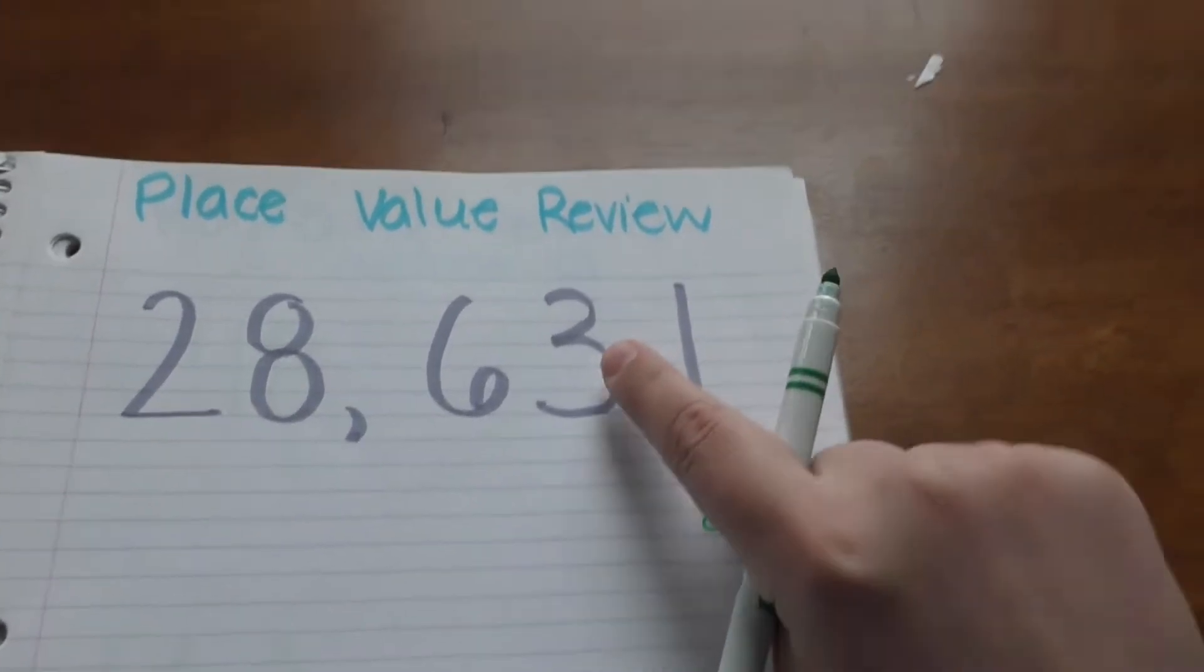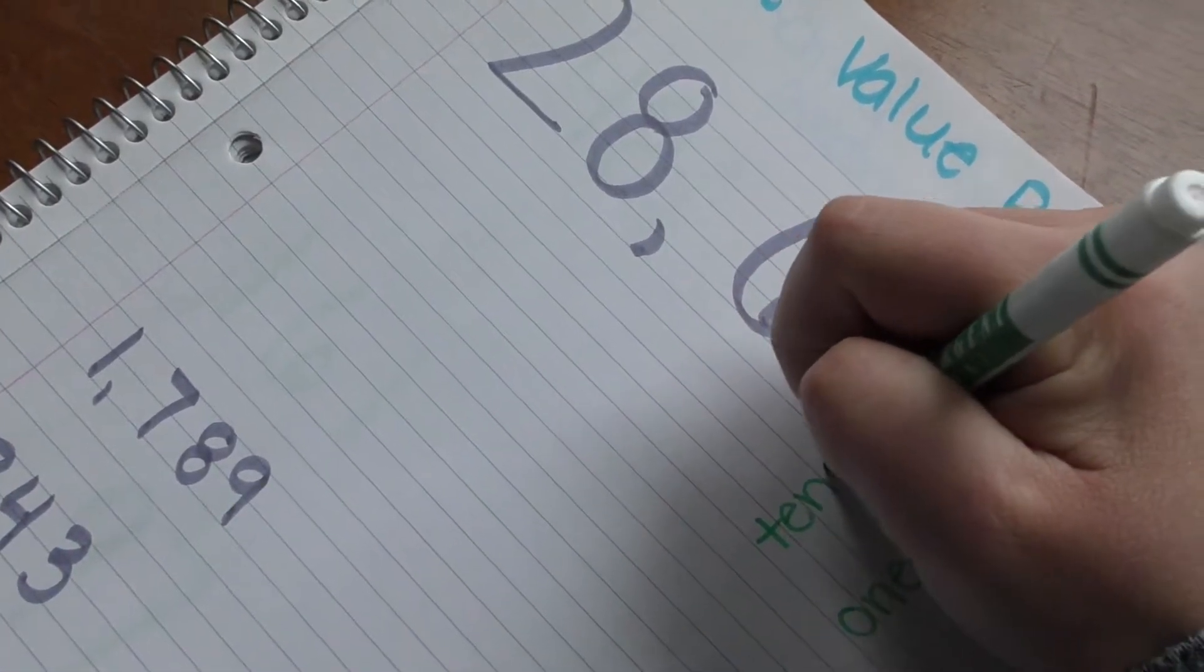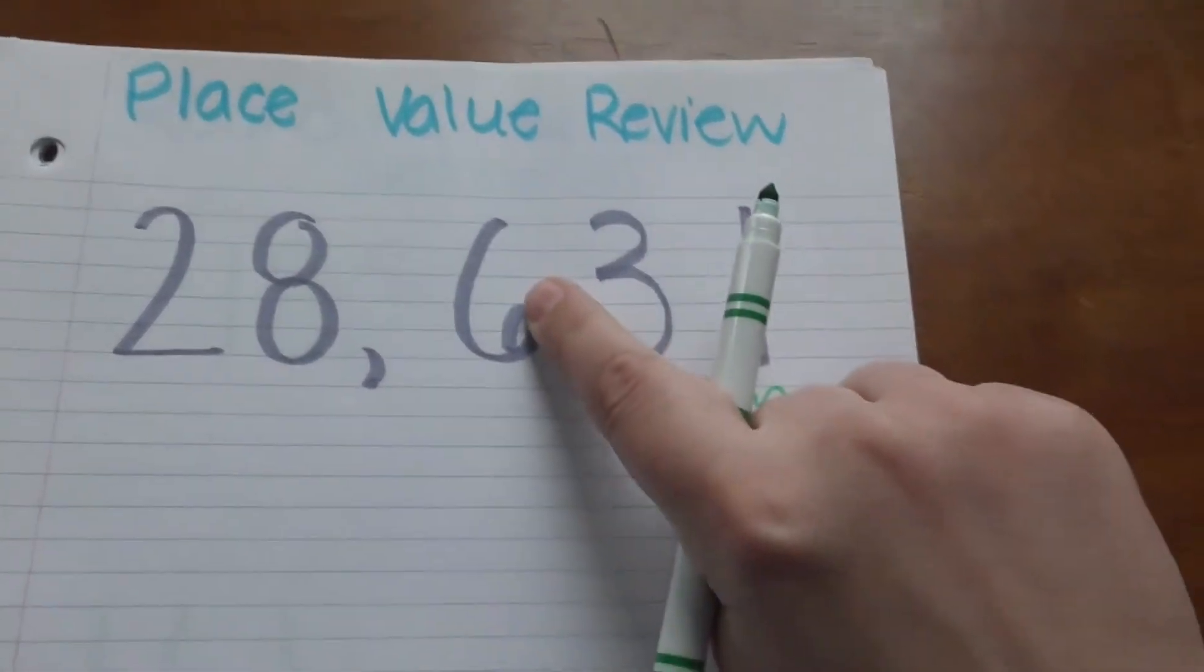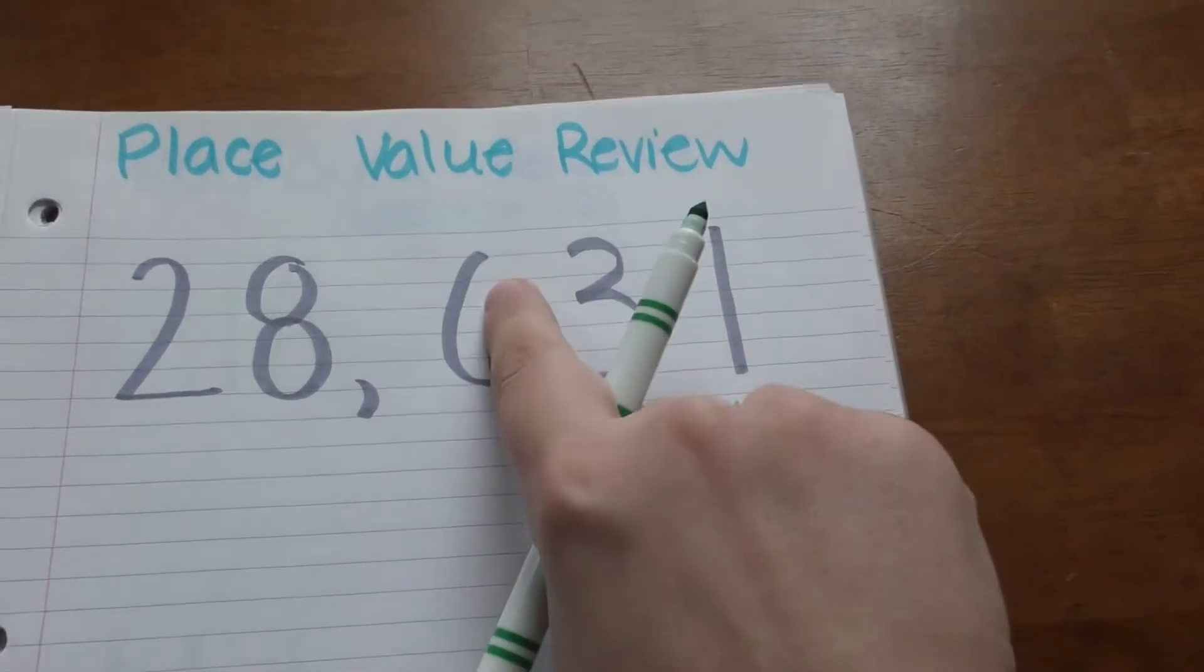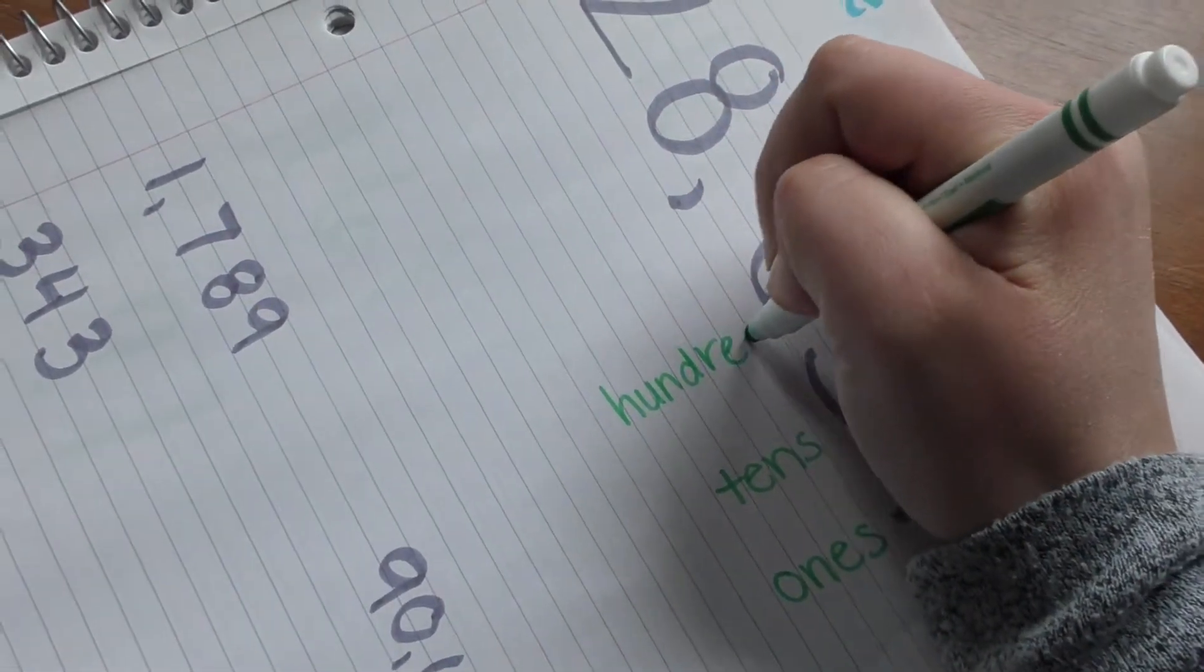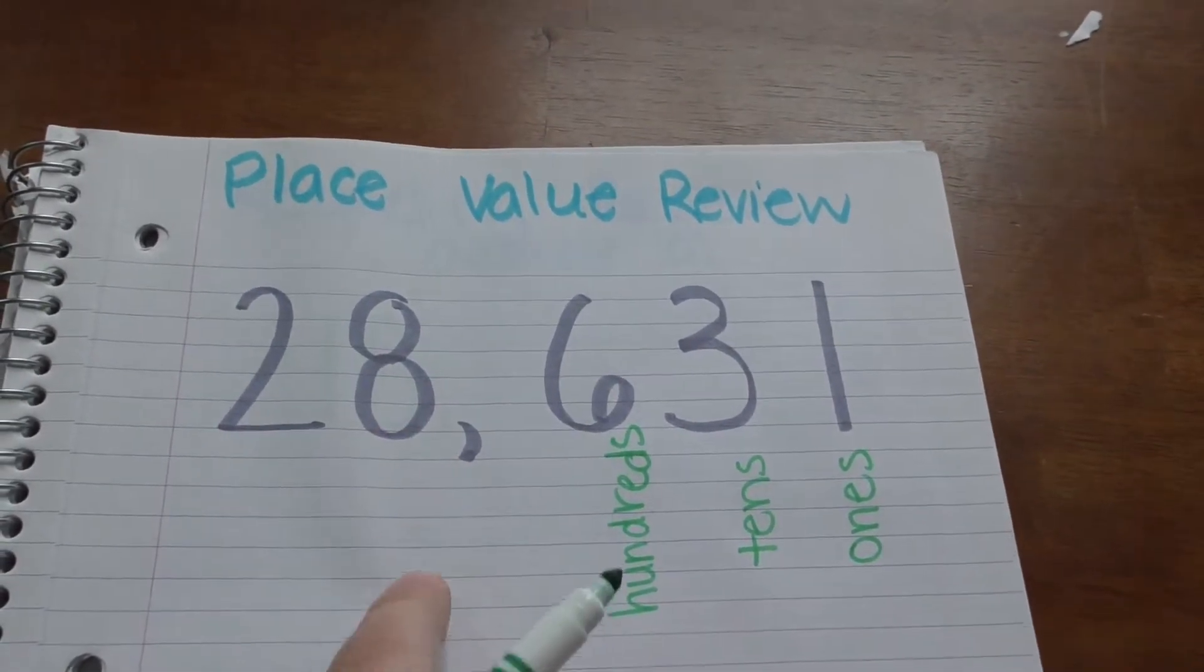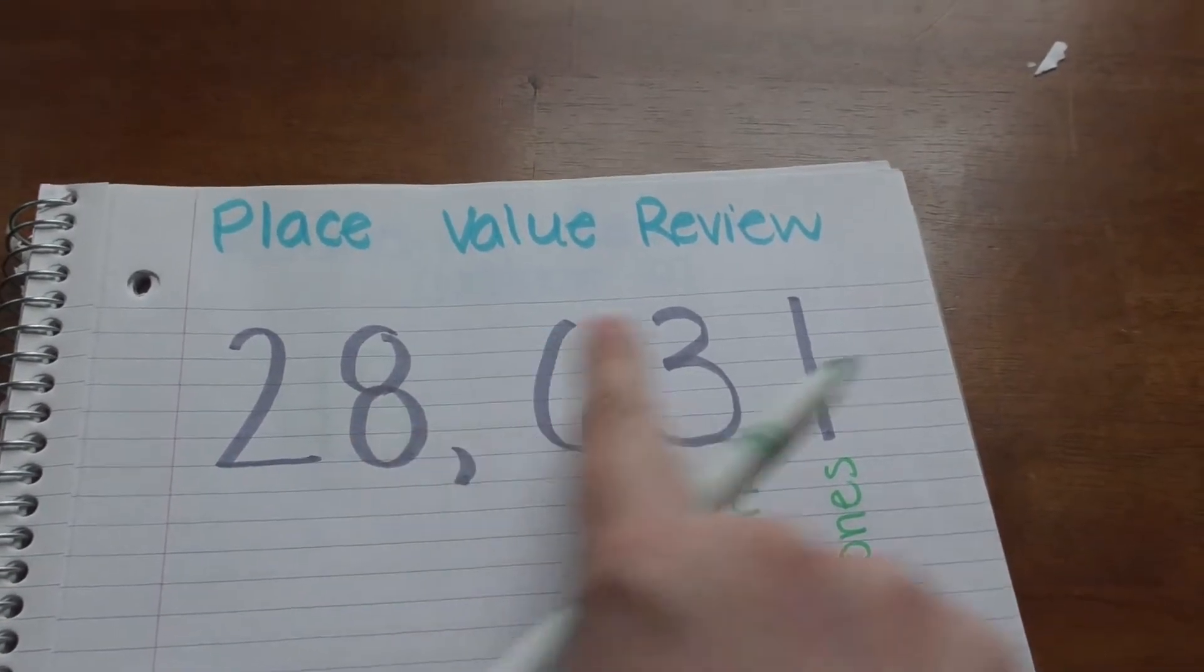Okay, the three is gonna be in the tens place. The six is in the hundreds place so it shows six hundred.